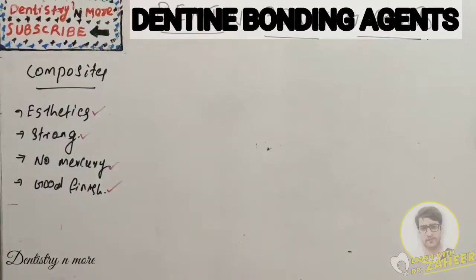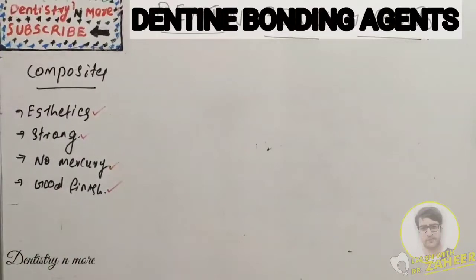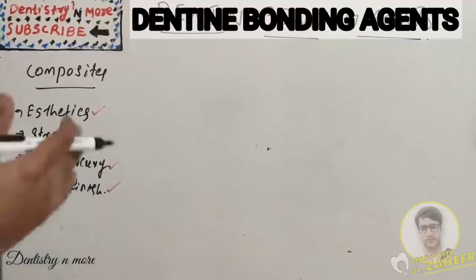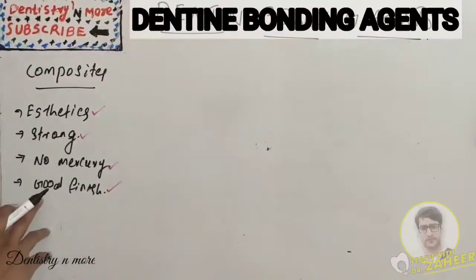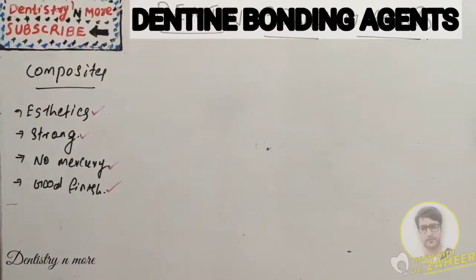Dentin bonding agent is used in composites. Composites are preferred over amalgam in recent dentistry because of their properties. First, aesthetics - it has very good aesthetics. Comparatively, we now have composite materials as strong as amalgam, and there is no mercury, so toxicity is minimal or zero. It has very good finish, making composites very patient friendly with high patient acceptance, mainly because of aesthetics and finish.